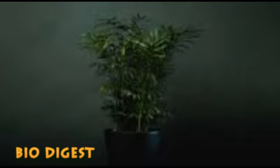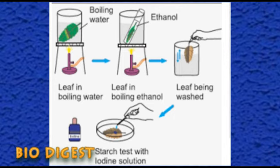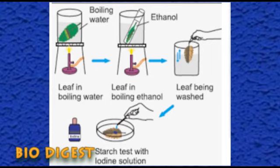Steps in carrying out the starch test: dip the leaf in boiling water for a minute to kill the cells; boil the leaf in methylated spirit over a water bath until it becomes pale white, removing chlorophyll; place the leaf again in hot water to soften it; spread the leaf on a tile; pour one or two drops of iodine. The presence of starch is indicated by a blue-black color; if starch is absent, the leaf shows brown coloration.